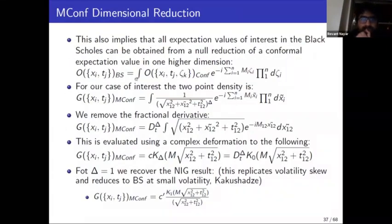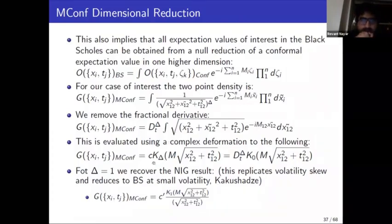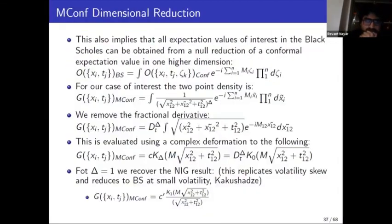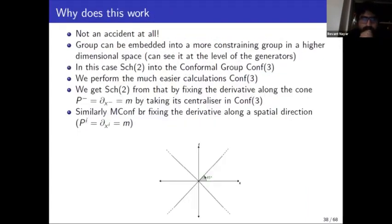In the m-conformal case you play the same game and get Bessel functions, derived by Kakushadze as well, which reduce to Black-Scholes at small volatility. This is essentially a large volatility limit that interpolates between Black-Scholes dynamics at one end and conformal dynamics at the other end.